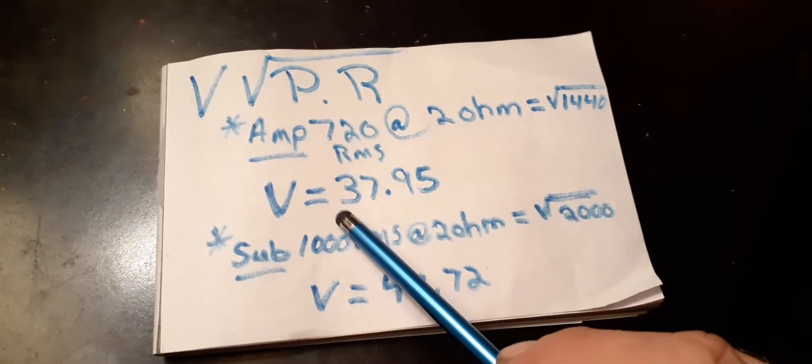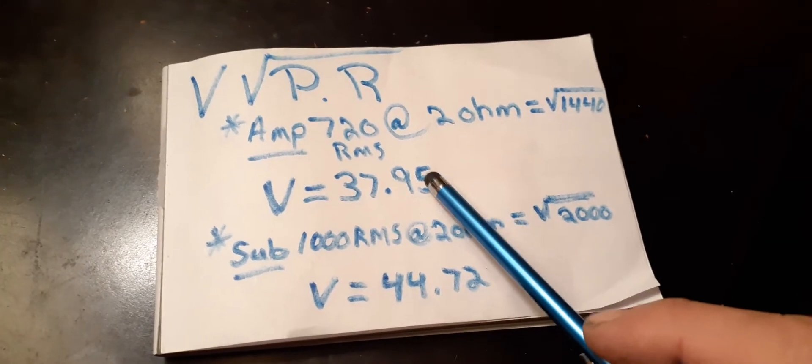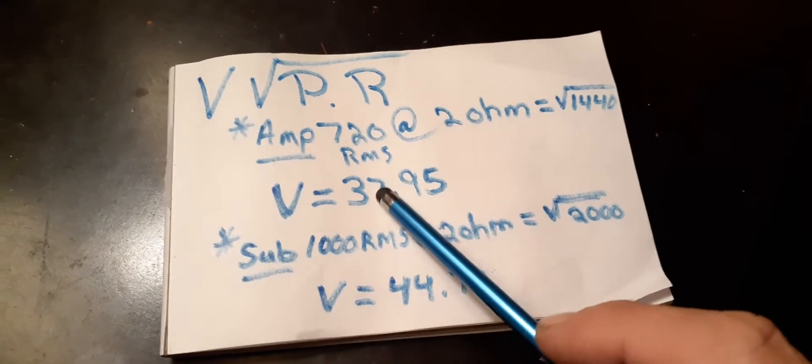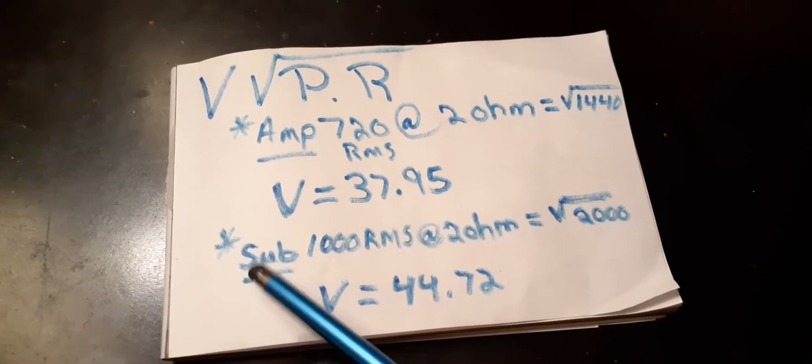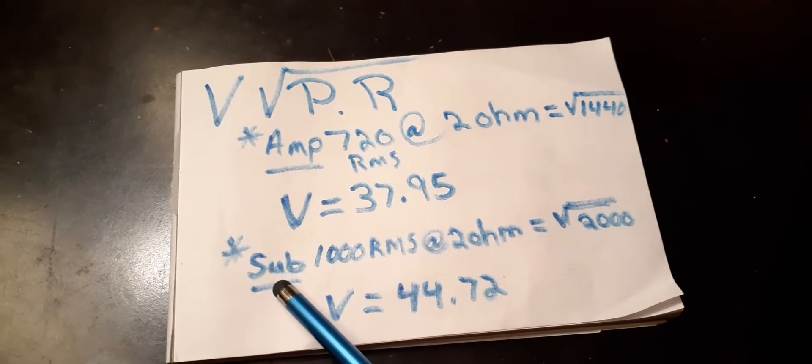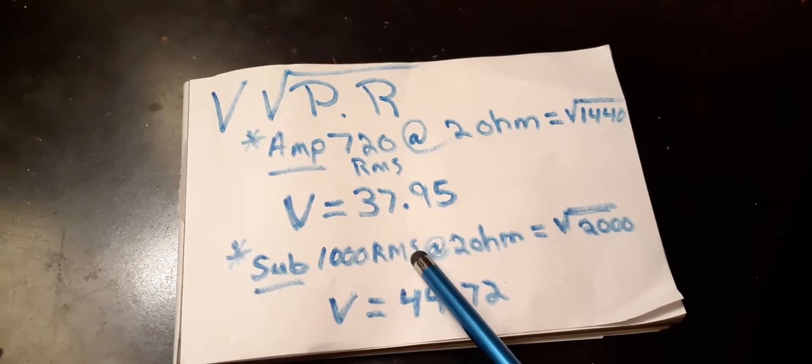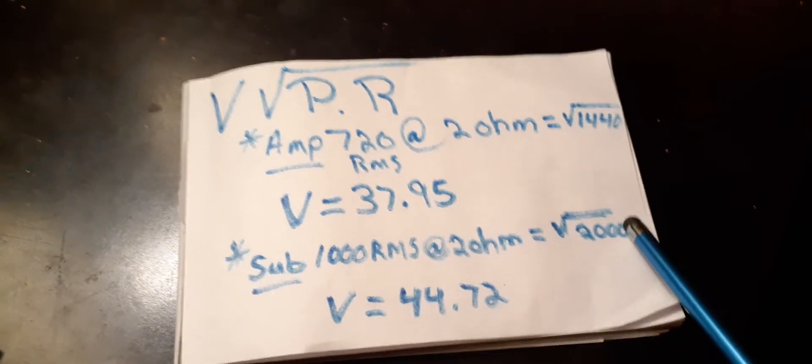The number comes out to be your voltage, 37.94, but I rounded that up, so you can round this up to 38 volts. If I went by the sub rating, 1000 RMS at 2 ohms, 2000 square root, the voltage is 44.72.